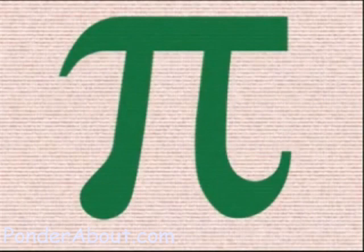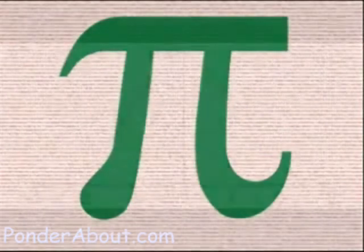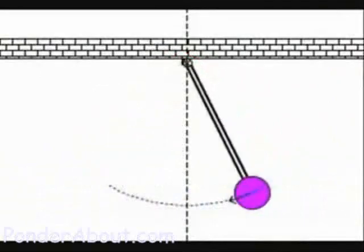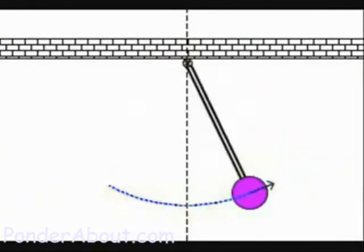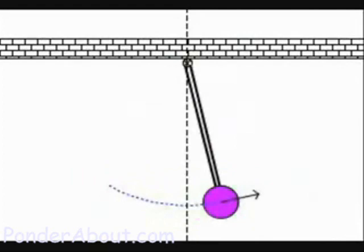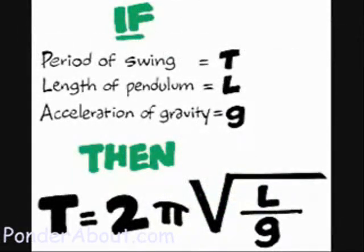It's a God-given number, and it appears everywhere from probability to pendula, as pointed out by maths enthusiast Rob Easterway. Oh, and by the way, l over g is pendulum length divided by the acceleration due to gravity.